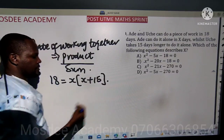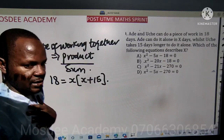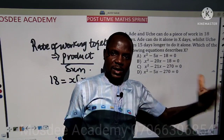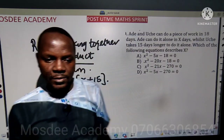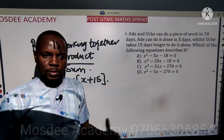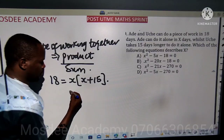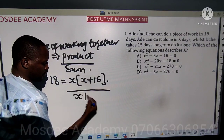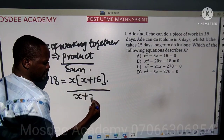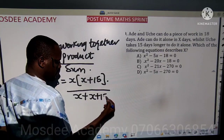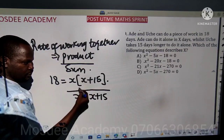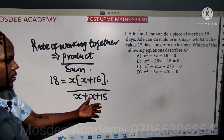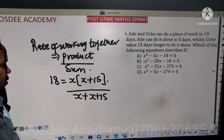I hope you understand that. If the first person takes x days, the second person takes 15 days longer. If I take 2 days and you take 15 days longer, you take 17 — it is 2 plus 15. So over the sum: the sum of the work is x plus x plus 15. You can see the product uses brackets and the sum of the work uses plus.